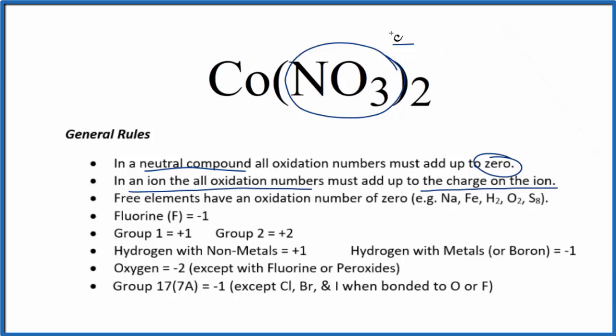Since I have two of them, all of this will have an oxidation number. It'll all add up to minus two. And remember, we said everything's going to equal zero. So the cobalt has to be two plus. So the oxidation number on the cobalt in cobalt 2 nitrate is two plus.